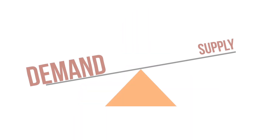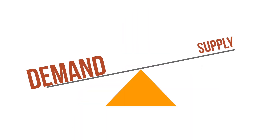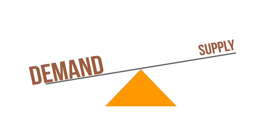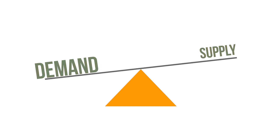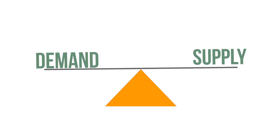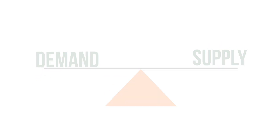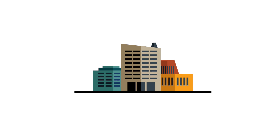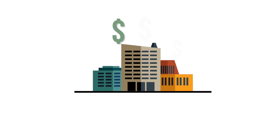Instead of producing more energy at great expense to consumers and the environment, the grid can offset the imbalance by reducing the amount of electricity being consumed during times when demand exceeds supply. That's demand response, and it can be very financially rewarding to organizations like yours.